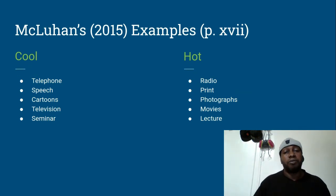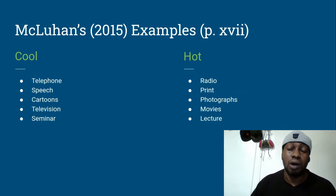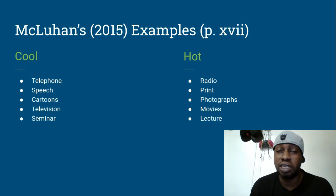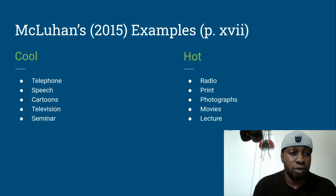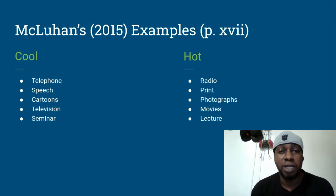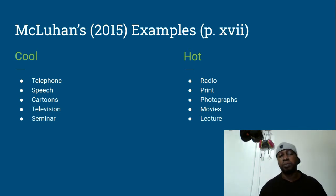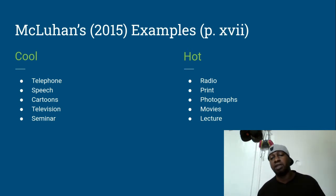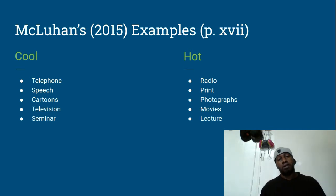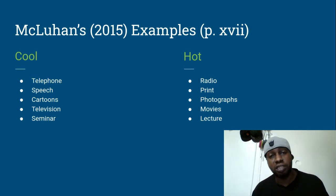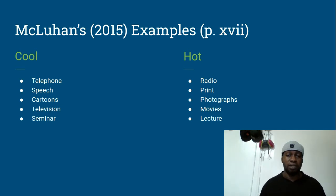McLuhan provided some examples in his editor's introduction on page 17 with the differences of a cool medium and a hot medium. A cool medium includes telephone, speech, cartoons, television, and seminars. A hot medium includes radio, print, photography, movies, and lectures. My presentations cover chapters 29 and 30, which are two hot mediums: radio and movies.